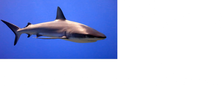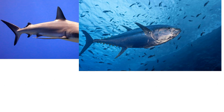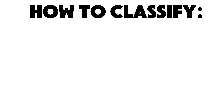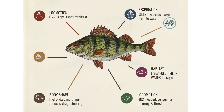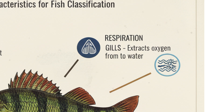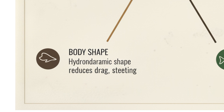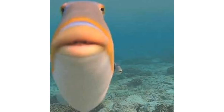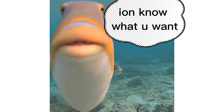Fish — sharks, tuna, clownfish, stingrays. The darkest secrets of a fish? It'll just stare back like, 'Bro, I live in water. What do you want from me?'